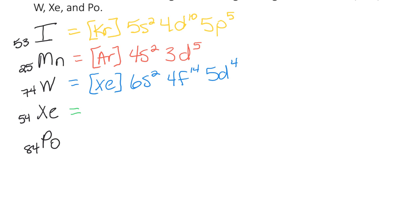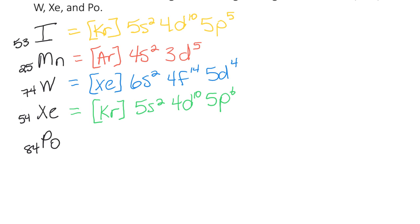Xenon is the end of the fifth row — a noble gas — so we go to the end of the fourth row, which is krypton. Starting at krypton: [Kr] 5S2, 4D10, 5P6, since it's the end of the row. Counting: 36, 38, 48, 54. Correct.